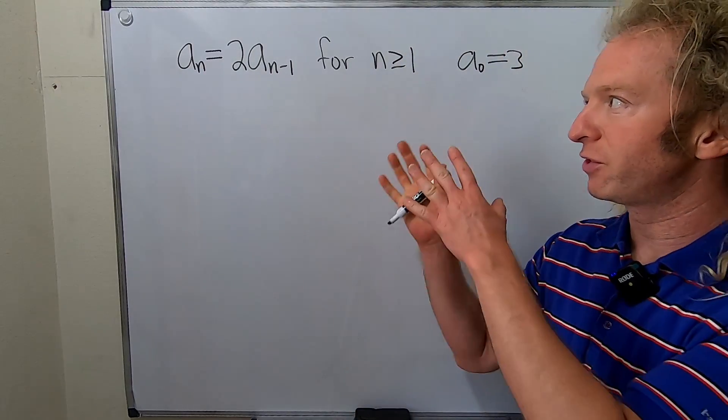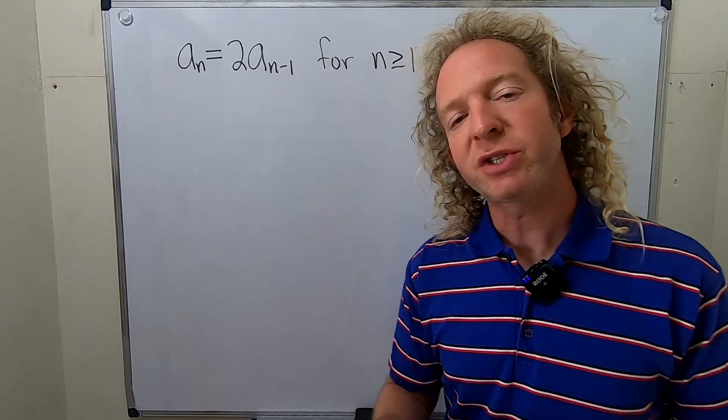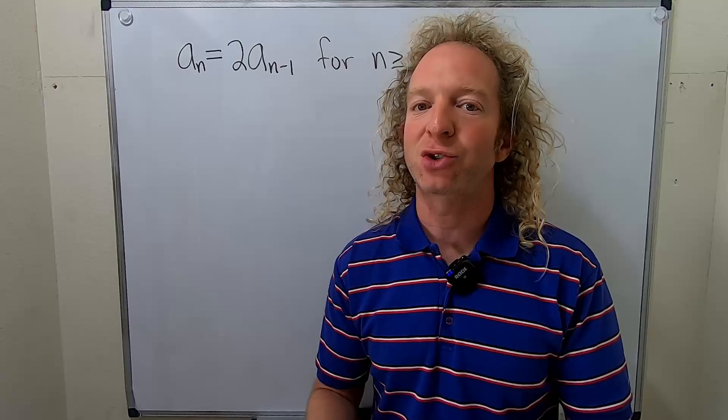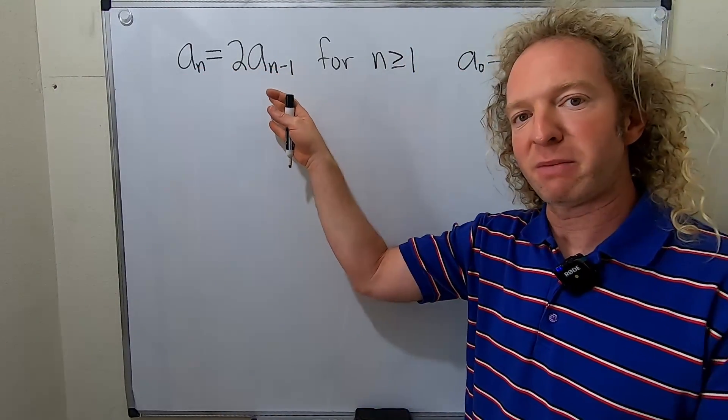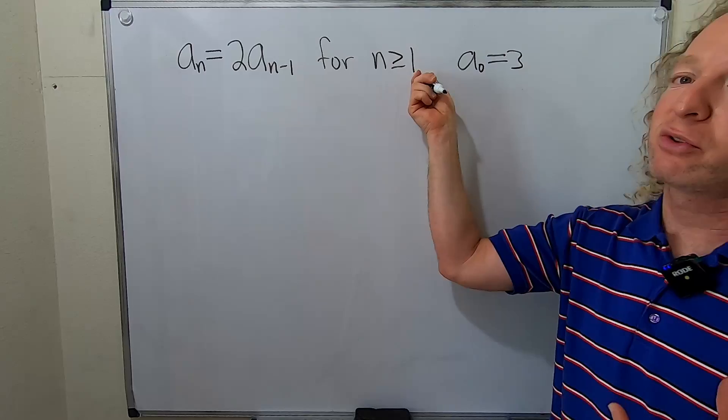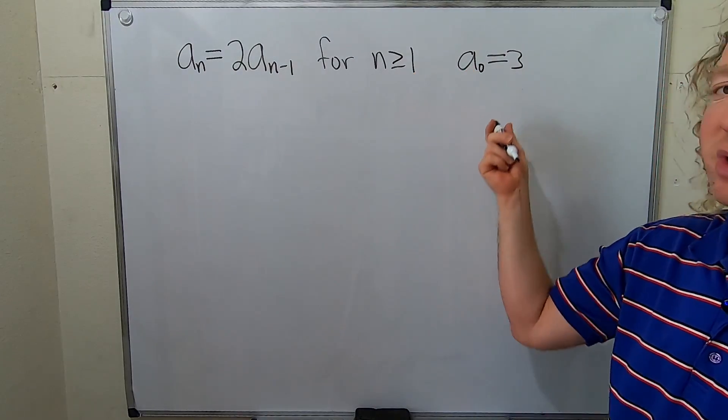Hey everyone, in this video we're going to solve this recurrence relation using something called the method of backtracking. So we have a_n equals 2 times a_{n-1} for n greater than or equal to 1, and here a_0 is equal to 3.